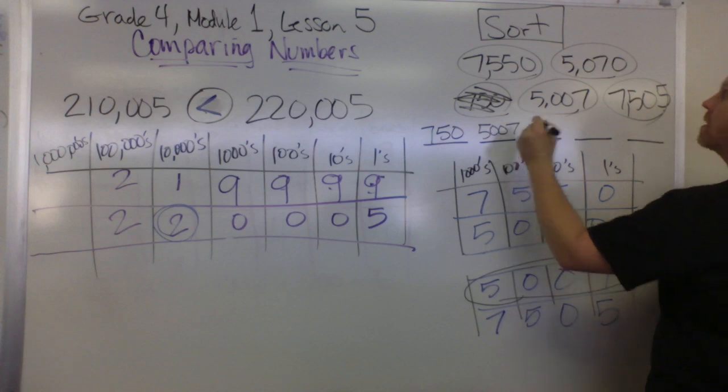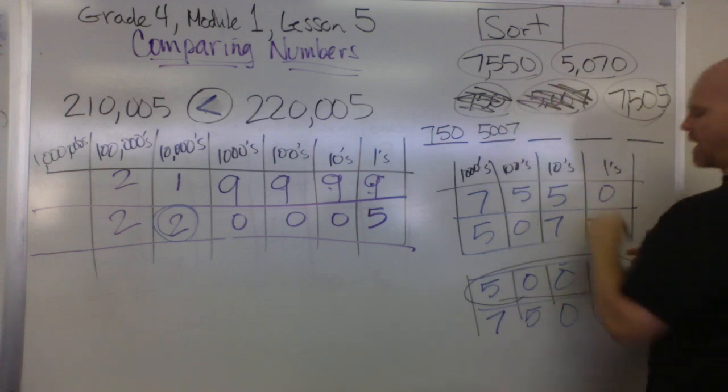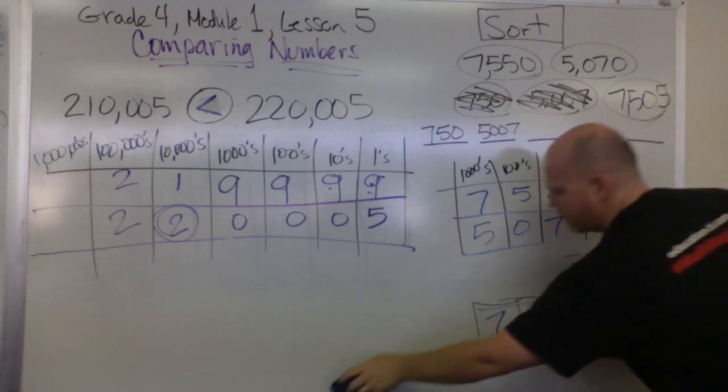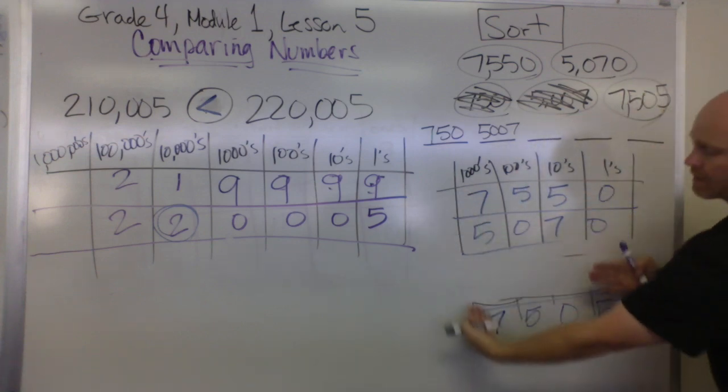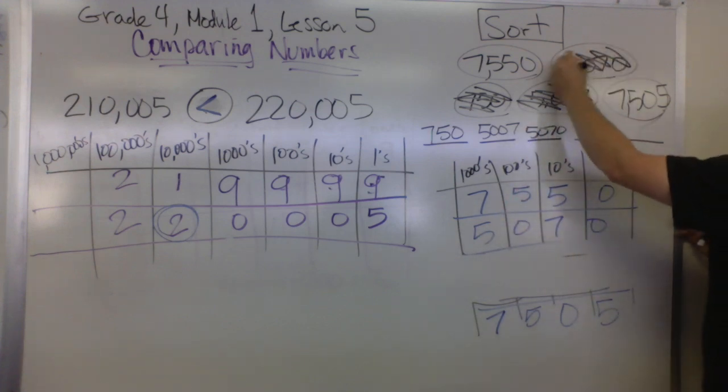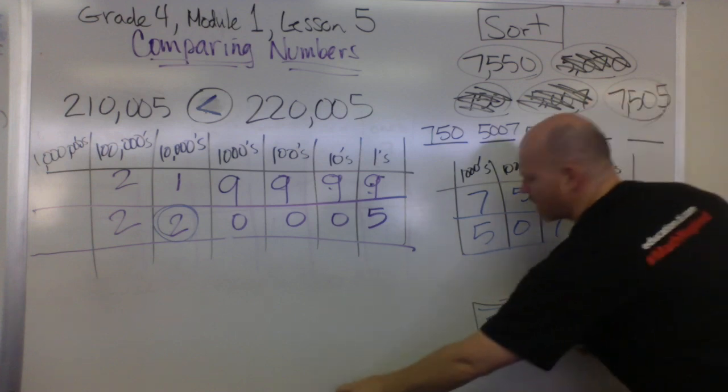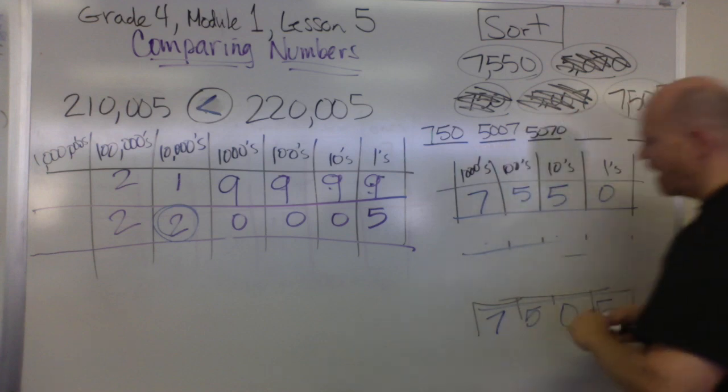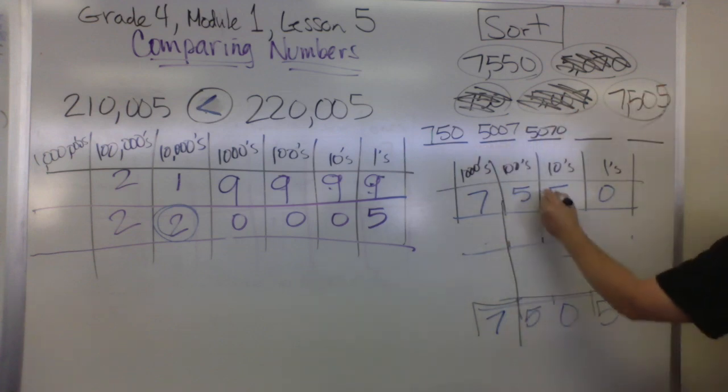So now we've got our next least number. I can cross that guy off and erase him. That automatically means this guy is next: 5,070, five thousand seventy. So I can cross him off—five thousand seventy—and I can extend my columns.